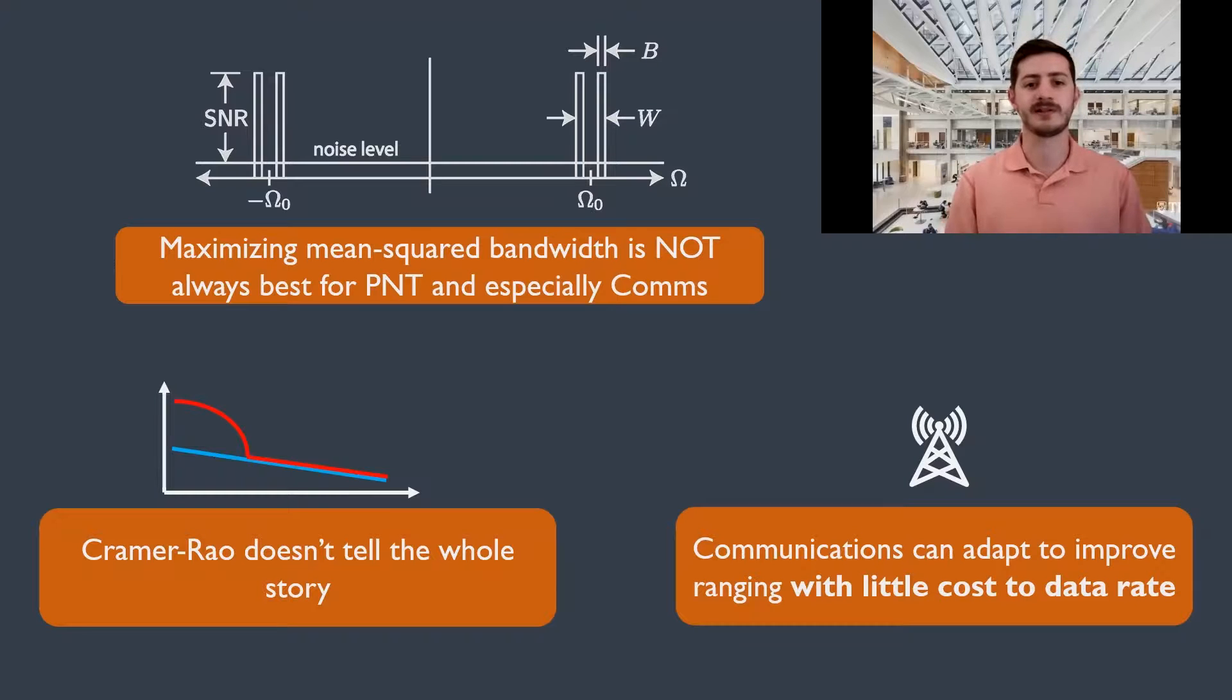So we have many unique takeaways from the study. The first is that maximizing your mean squared bandwidth is not always the best for PNT and especially not for comms when multipath is present. Secondly, the Cramer-Rao bound does not capture the full story and it misses an important thresholding effect that can occur at low SNRs. And third is looking at those Pareto curves, we have intricate relationships between the parameters to tune and it gives us an opportunity to increase ranging performance with little cost to our data rates.